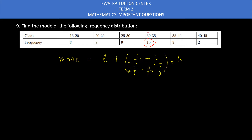In the modal class, the lower limit L is the value of 30. Now the second thing: H is the height, which is the class width. In 30 to 35, the gap is 5. So H is 5.